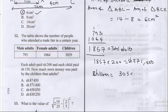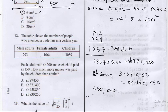For the children: 3059 multiplied by 150 gives 458,850 shillings. The children paid more than the adults. Subtracting: 458,850 minus 371,400 gives us 87,450 shillings. The correct answer is A.